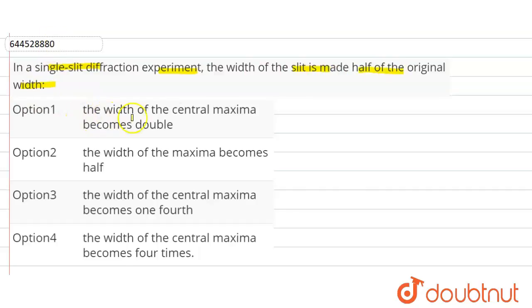Four options are given: the width of the central maxima becomes double, the width of the maxima becomes half, width of the central maxima becomes fourth.